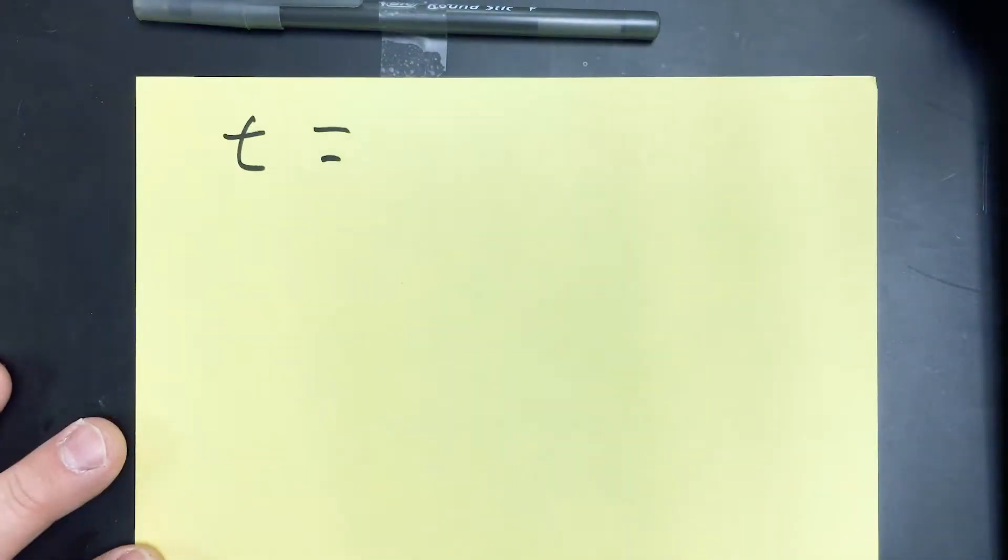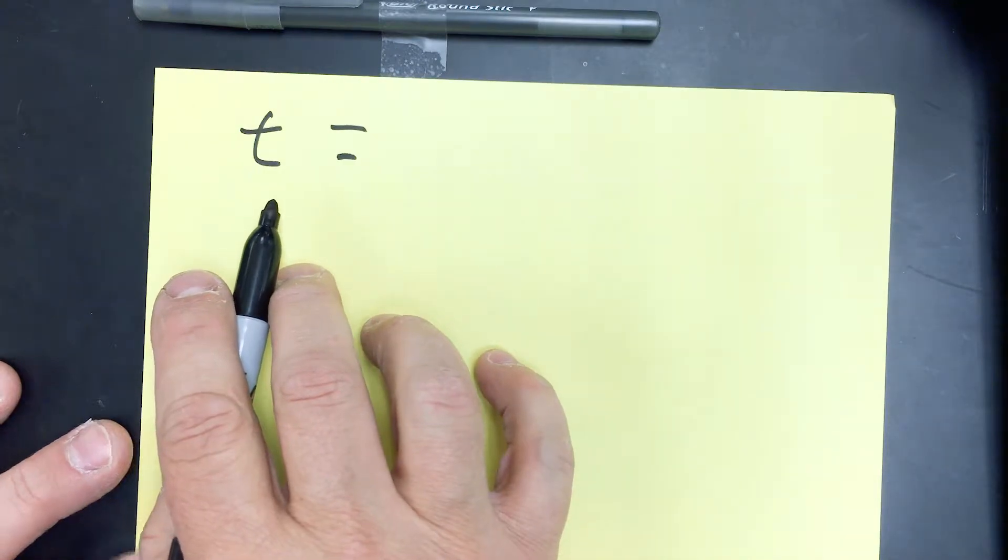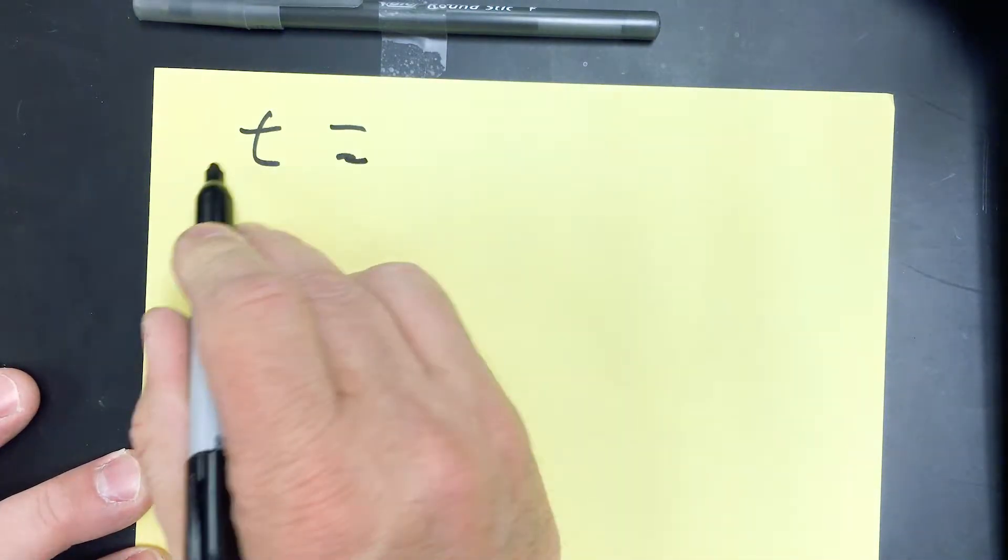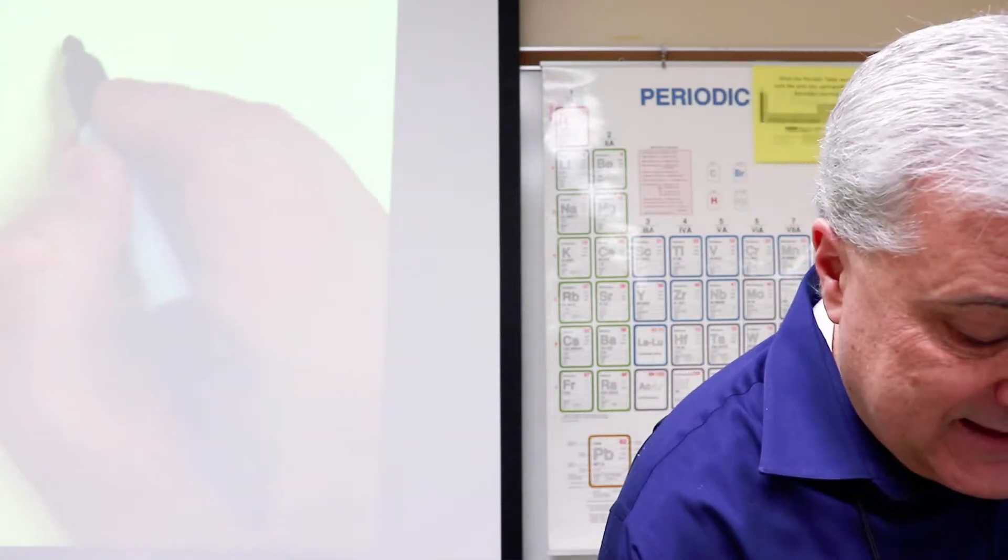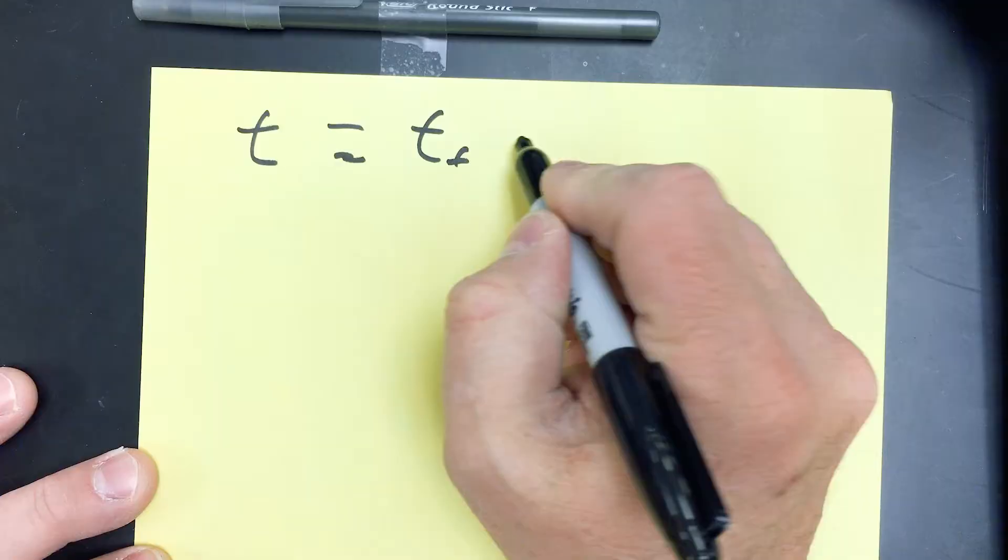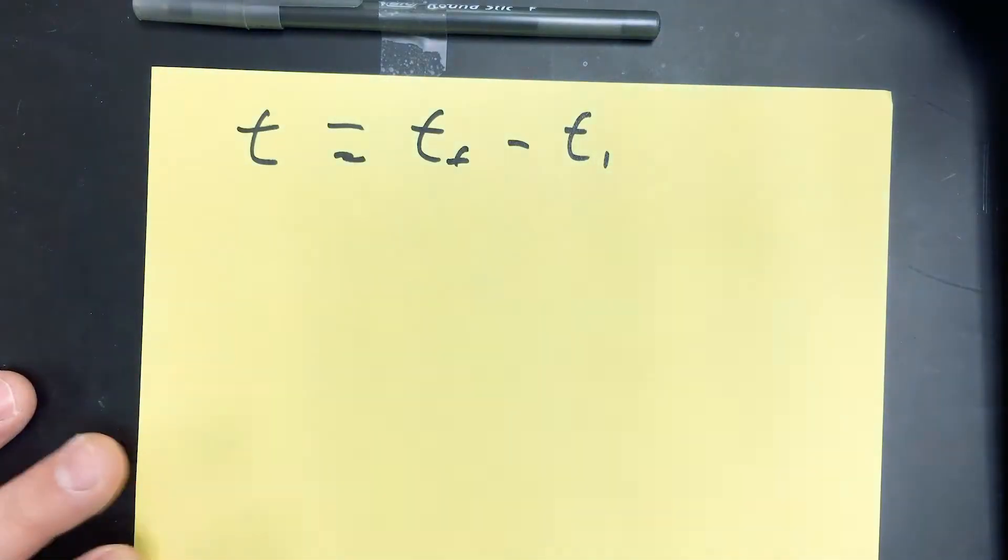The first thing is the formula for elapsed time. You should use the variable t for time. And the elapsed time, the time that passes, how long does it take? That's the time when it ended minus the time when it began. So it's t sub f minus t sub i.